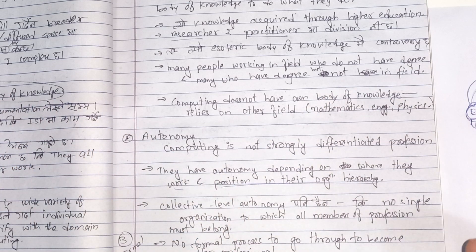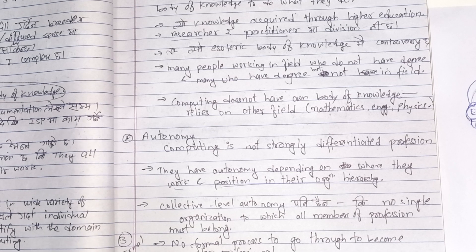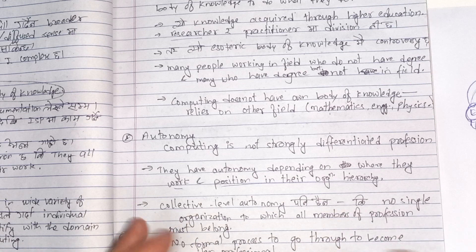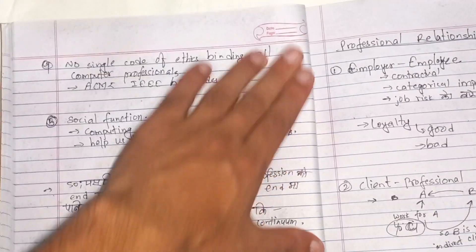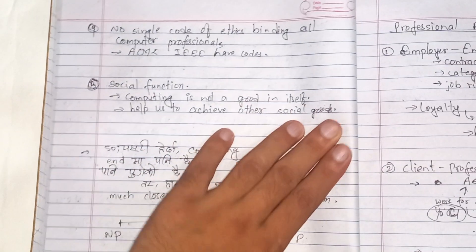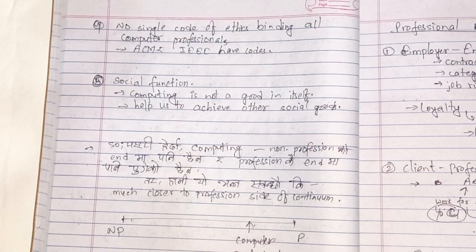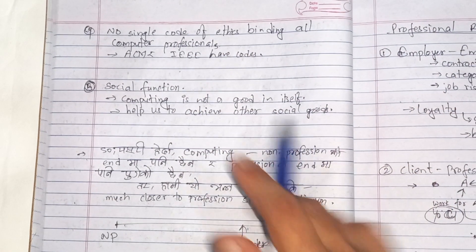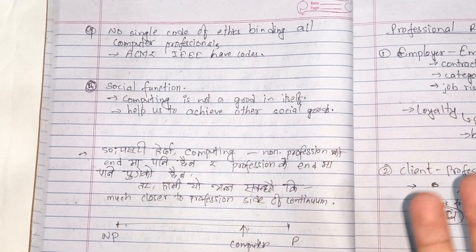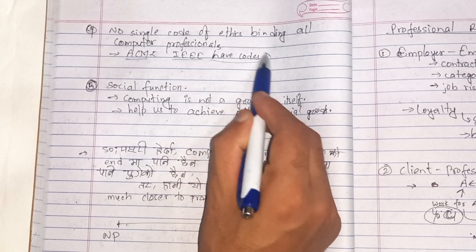They have to become a professional organization — just like ACM (Association for Computing Machinery) and IEEE Computer Science. There is no single code of ethics binding all computer professionals. For example, IEEE has its own code of ethics, and the Texas Software Engineering Council also has one, but there is no single code of ethics to bind all computer professionals. There is a large community of computing professionals under ACM and IEEE.